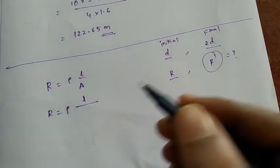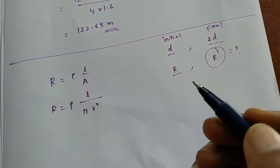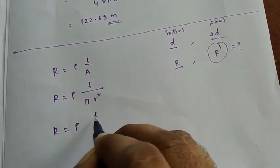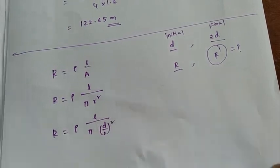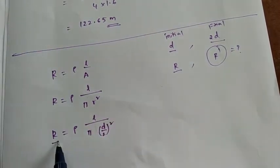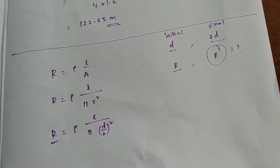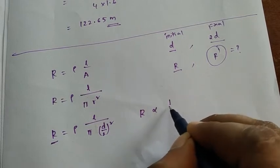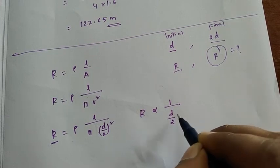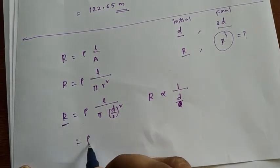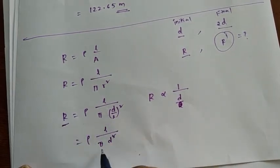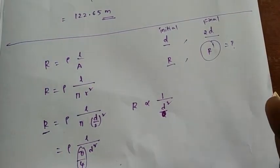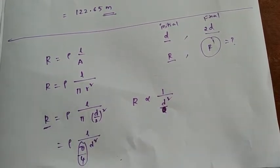The cross-sectional area is πr² = π(d/2)². Rewriting R = ρL / [π(d/2)²]. From this, resistance is inversely proportional to (d/2)², which means resistance is inversely proportional to d². Constants like ρ, L, π, and 4 are fixed, so R ∝ 1/d².